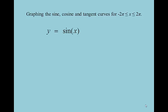We're going to be graphing today — graphing sine, cosine, and tangent curves. We are going to graph them between negative 2π and 2π, but understand that they graph in both directions forever and ever. We're just going to look at a small window of each graph between negative 2π and 2π along the x-axis.